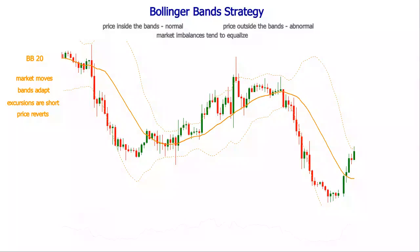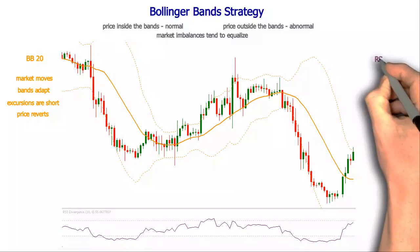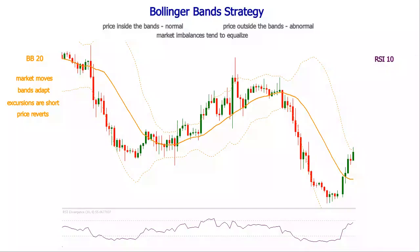To further improve the accuracy of the entries, we can couple the Bollinger Bands with an oscillator. The relative strength index is one such indicator that can offer the confluence we need. Matching the periods of the two indicators will make them walk in step. Having a shorter period for the relative strength index will make it go overbought or oversold more easily. We are looking for places where the price shows exhaustion, where the relative strength index can be overbought or oversold.